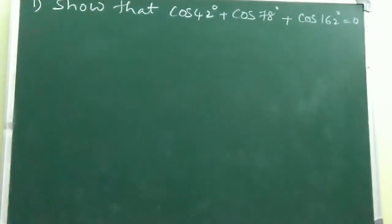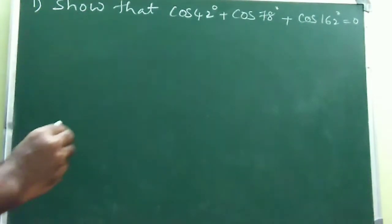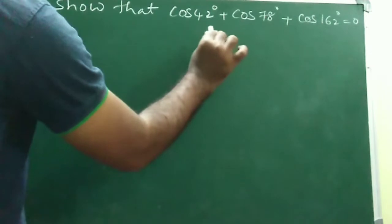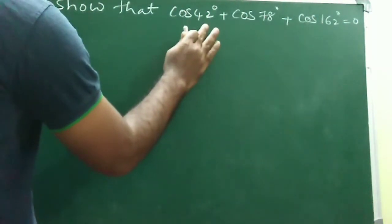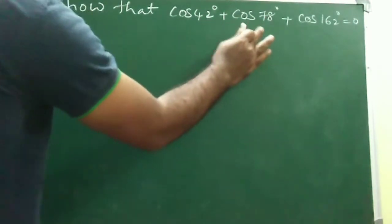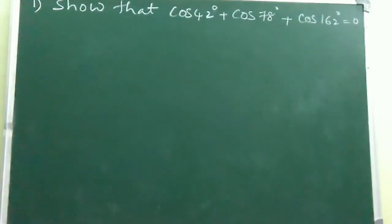Coming to question number 1: show that cos 42° + cos 78° + cos 162° = 0. We don't know any one of these values directly because 42°, 78°, and 162° are not standard angles.